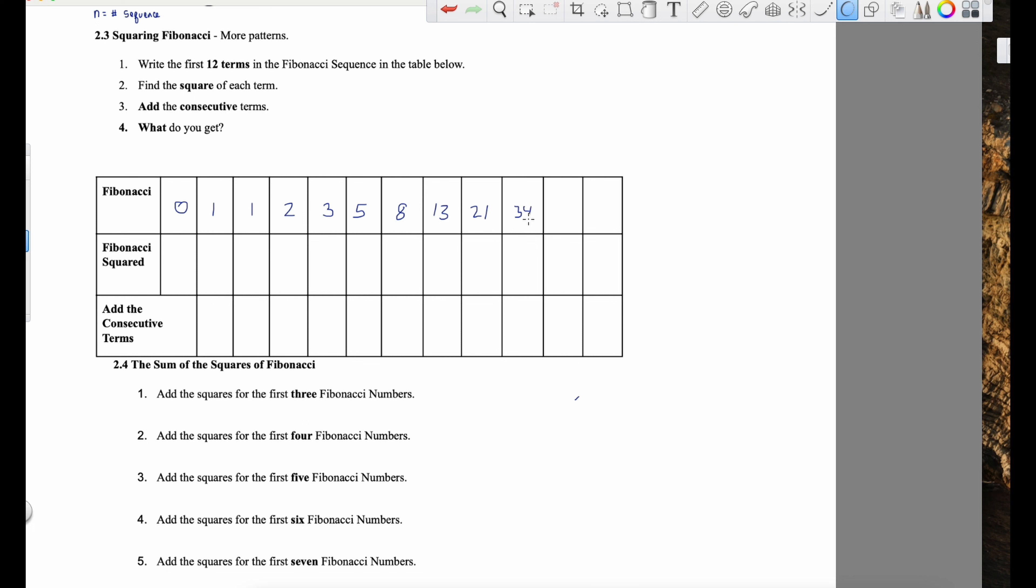And we took the Fibonacci number sequence and found that if we took a term and divided by the previous term, we got a set of numbers that started to approach the golden ratio as well, 1.618.